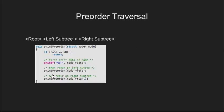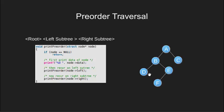First we have the preorder traversal. This is the code snippet taken from GeeksforGeeks and we will follow this recursive algorithm. Let's also have a sample tree — we will run our algorithm for this tree. Let's start from node A. Since it is not null, we print it and move to its left subtree.